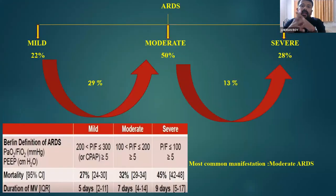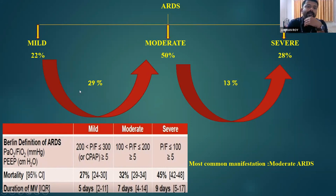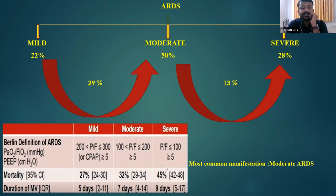ARDS can be classified as mild, moderate, and severe. The most common manifestation is moderate ARDS — moderate accounts for about 50%, mild 22%, and severe 28%. About 29% will progress from mild to moderate, and 13% from moderate to severe. As severity increases from mild to moderate to severe, there is significant increase in mortality from 27% to 45% and duration of mechanical ventilation from five to nine days.